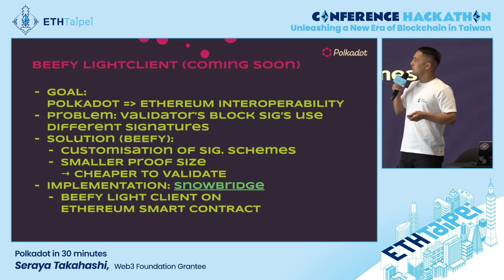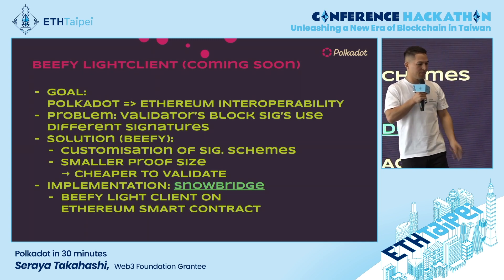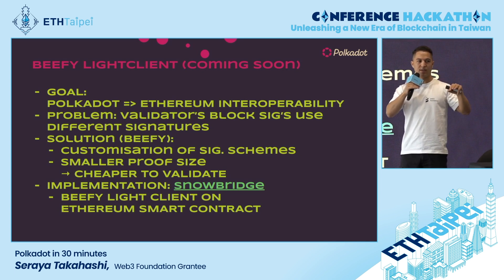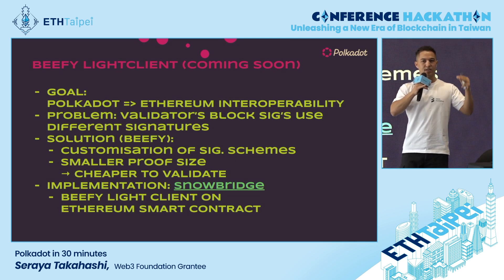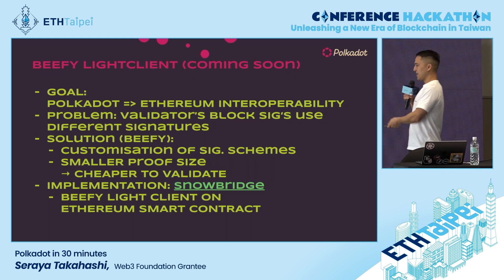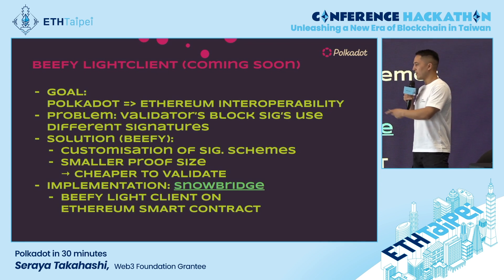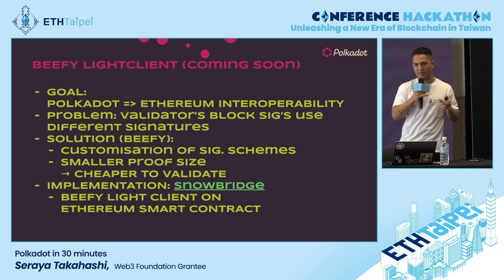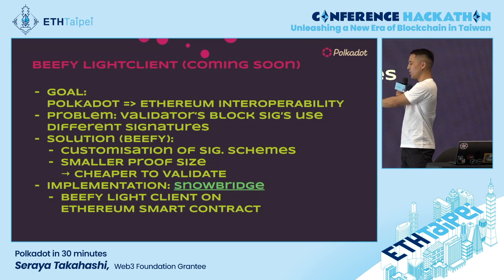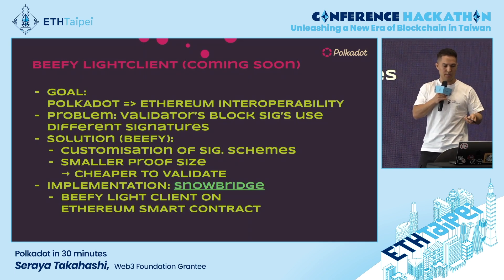We also have the BEEFY light client, which will make it possible to bridge Polkadot to the Ethereum network by creating a compatibility layer for the two networks' signature schemes, since they use different block signing algorithms. There is an implementation called SnowBridge, which is building this bridge using a BEEFY light client deployed as an Ethereum smart contract that connects to the Polkadot network. The SnowBridge side on the Polkadot side is going to live on the Bridge Hub — one of the system chains mentioned earlier.